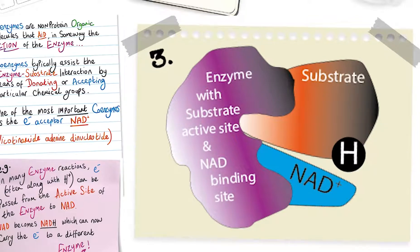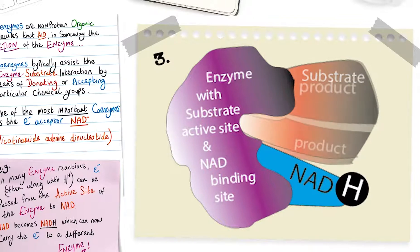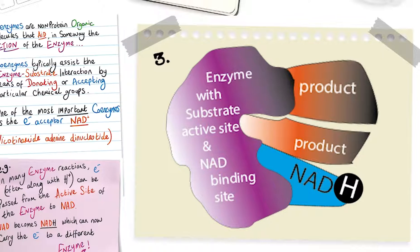In step three, a redox reaction takes place as NAD accepts the hydrogen, which is transferred to it from the substrate. NAD accepts the hydrogen and forms NADH or reduced NAD.